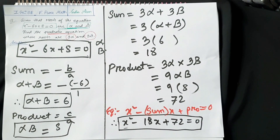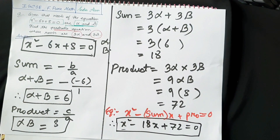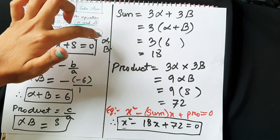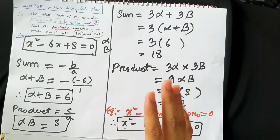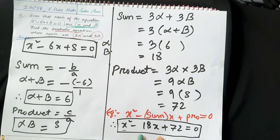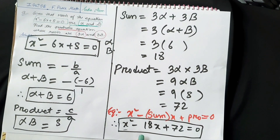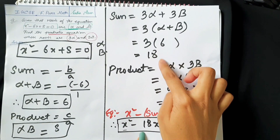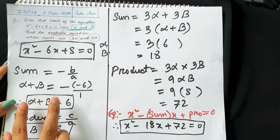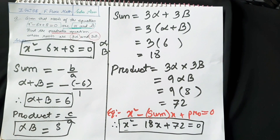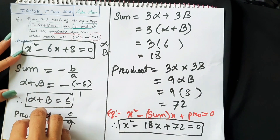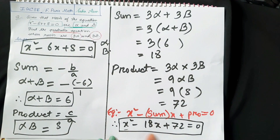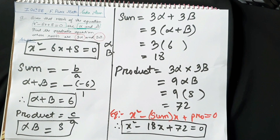To summarize: we are given one quadratic equation whose roots are alpha and beta. We need to find another quadratic equation with roots 3α and 3β. To solve this, we need the values of alpha plus beta and alpha times beta. We cannot get numerical values otherwise. So we use the given equation to find these values, form the sum and product expressions, substitute, and that gives us the new quadratic equation.